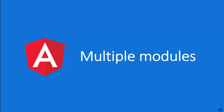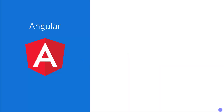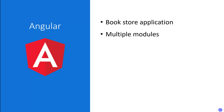We are working on a real-time bookstore web application. In this application there will be multiple features, and to work on those multiple features we have to work on multiple modules. Let's understand how we can add multiple modules in an Angular application and how we can associate child components to those modules. First, let's understand how many modules we need in this bookstore application.